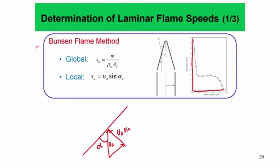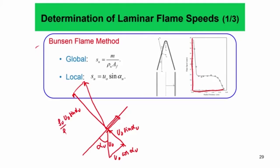The tangential component is u₀ sin α_u and the normal component is u₀ cos α_u. If you translate the tangential vector across the flame, the tangential component does not change — there is pure continuity of the tangential component across the flame — whereas the normal component changes because of heat release. So the actual flow velocity gets deflected, and the normal component on the burned side becomes u₀ sin α_u times ρ_u / ρ_b, because mass must be conserved across the flame.